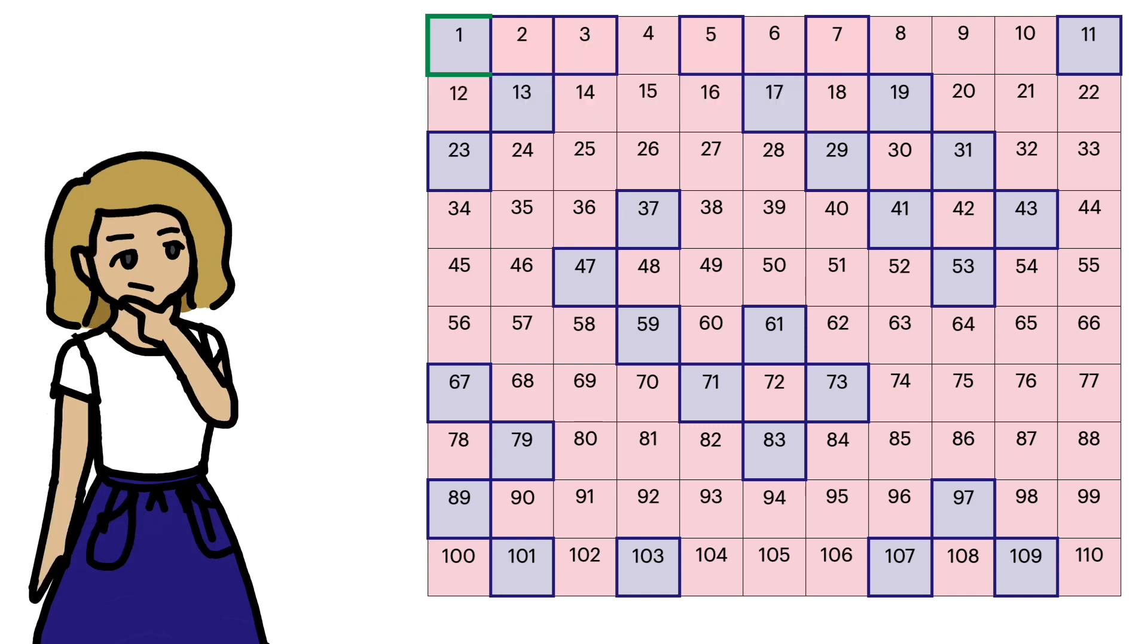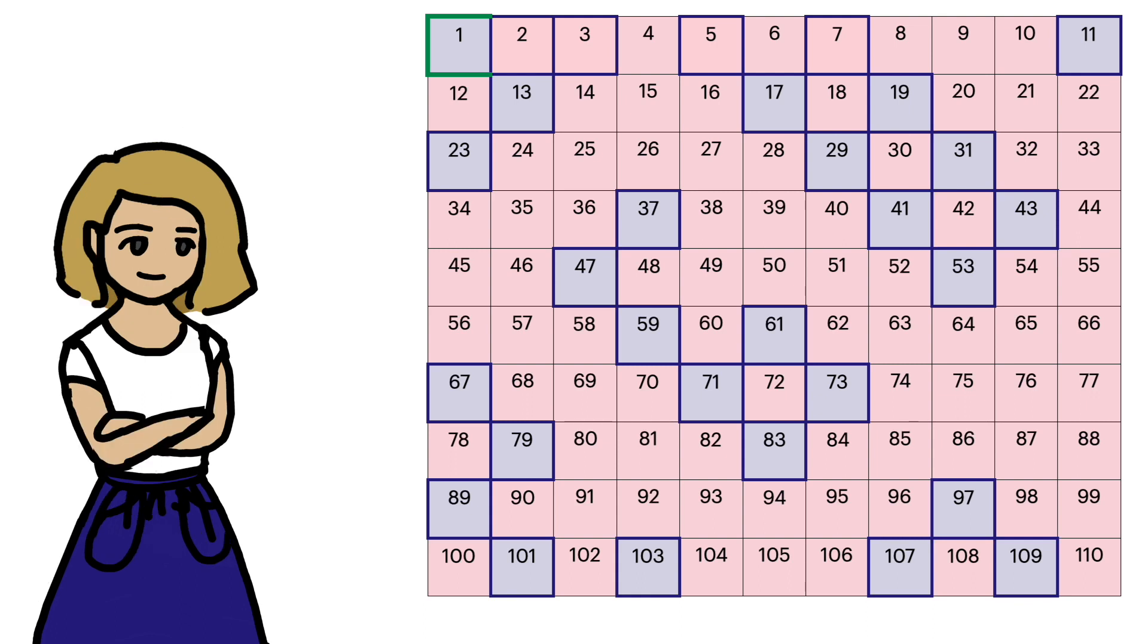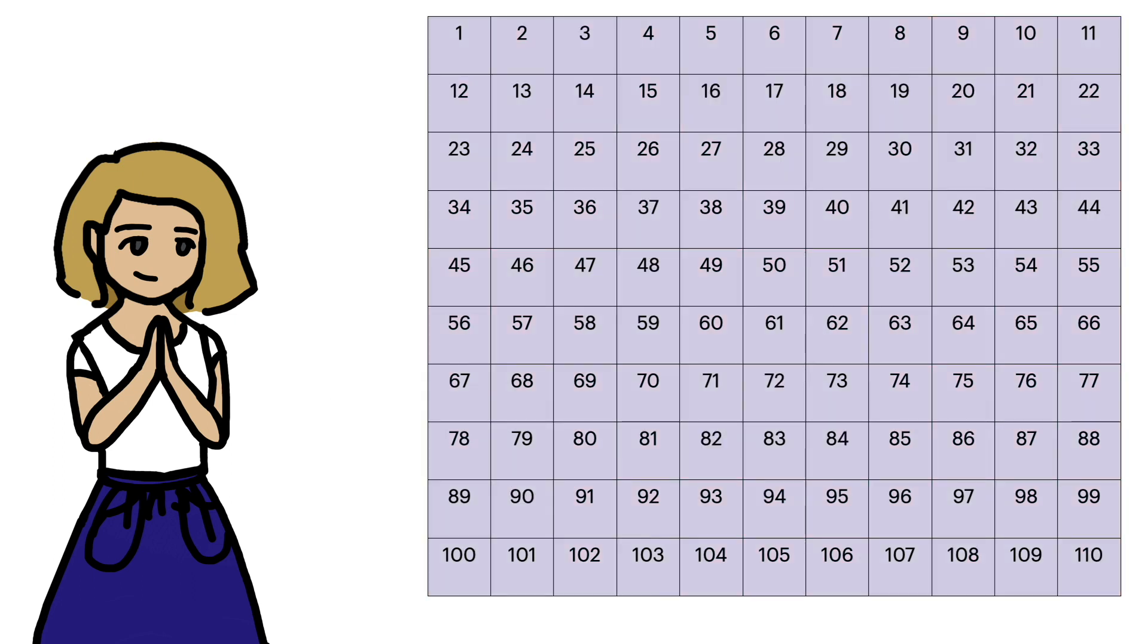But back to Euler's sieve. Everything I've described so far was characteristic of both Euler's sieve and the sieve of Eratosthenes generally. But Euler's sieve is special because it removes each composite number only once. Here's how it works. We start with all blue squares.